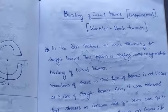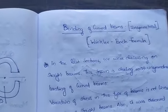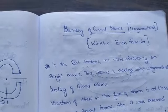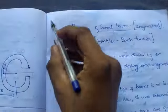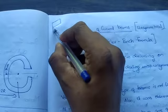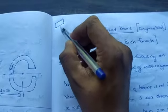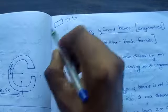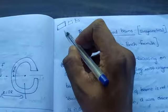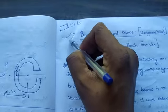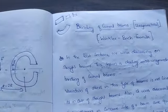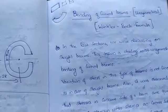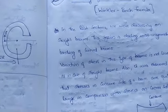Good morning. Today we'll be learning about the bending of curved beams — that means unsymmetrical bending of curved beams. Up to now we were learning about sections which were initially straight, having a rectangular section or an I-section, but they are straight beams. Now we are going to analyze the bending of initially curved beams. This section is called the Winkler-Bach formula.